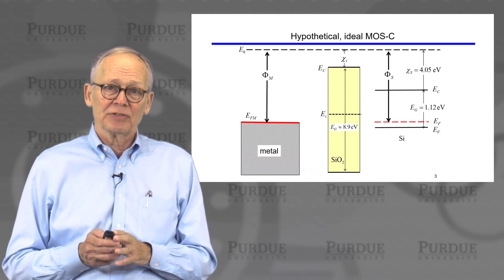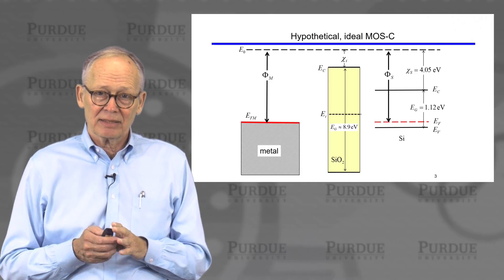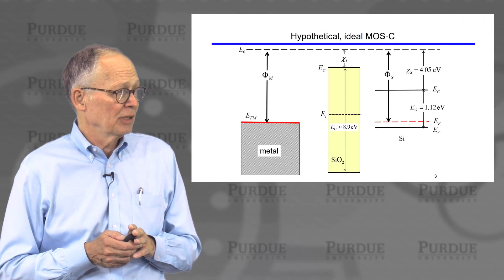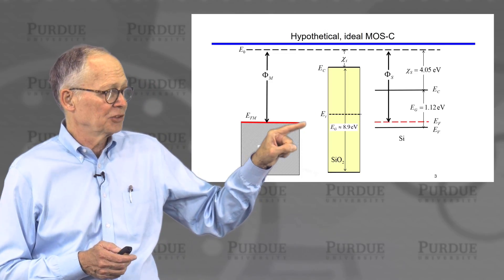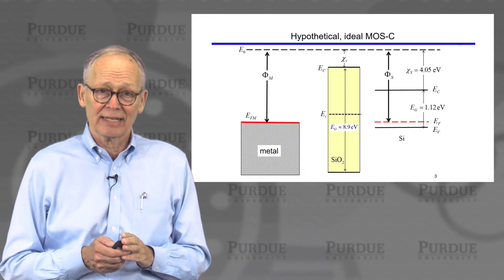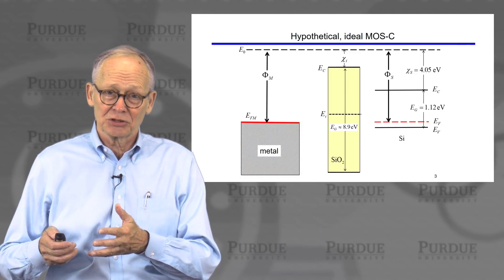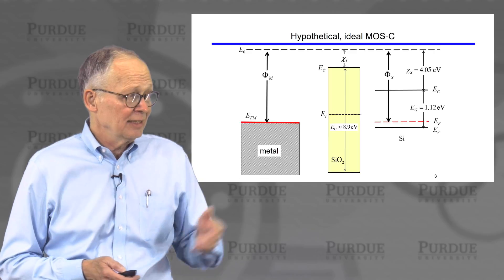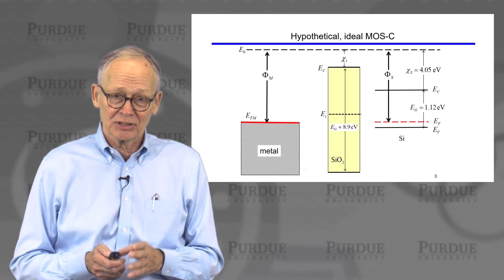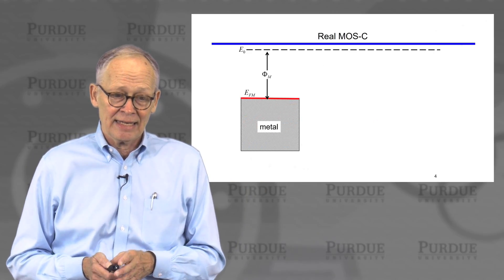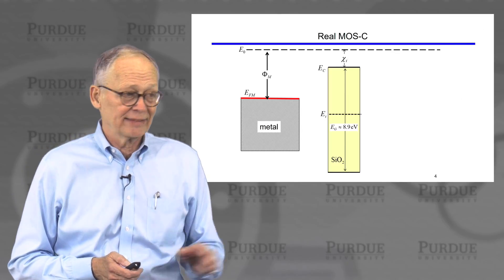We have to account for the fact that the metal and the semiconductor are, in general, not going to have this ideal situation where everything just happens to line up. Depending on how I dope the semiconductor, I'll change its work function. Depending on what metal I use, I'll change its work function. In general, we'll have a situation that would look like this.